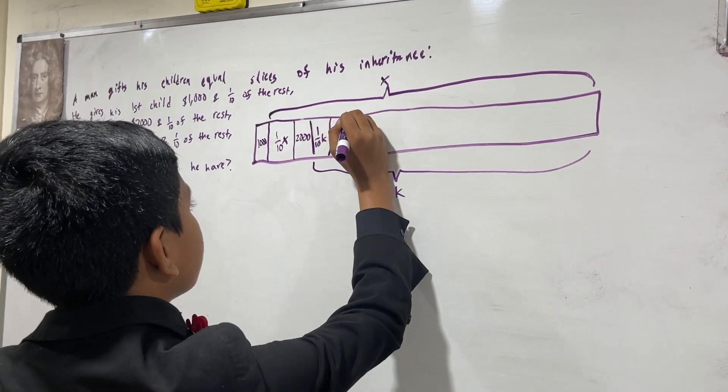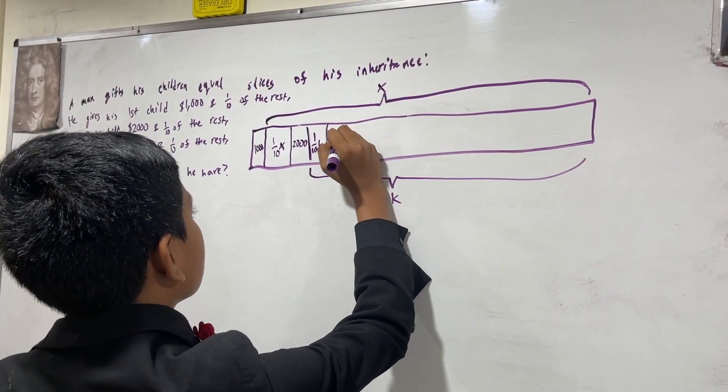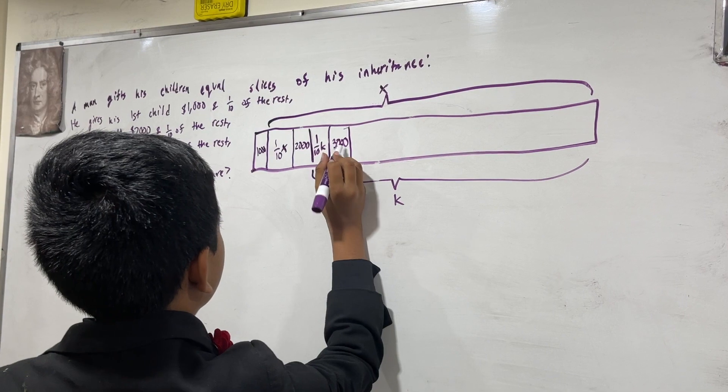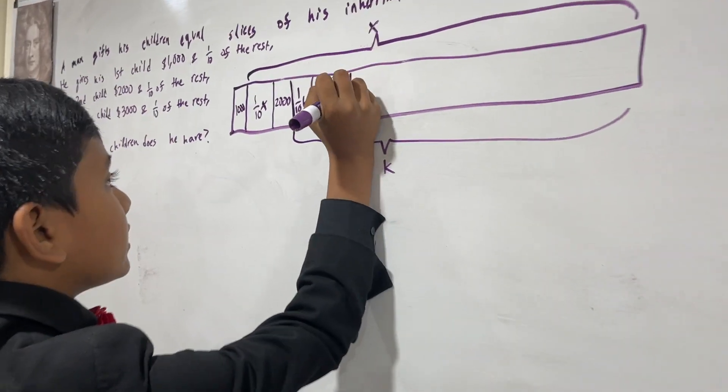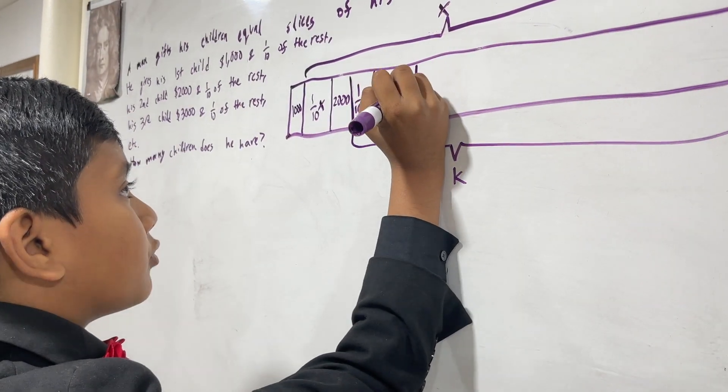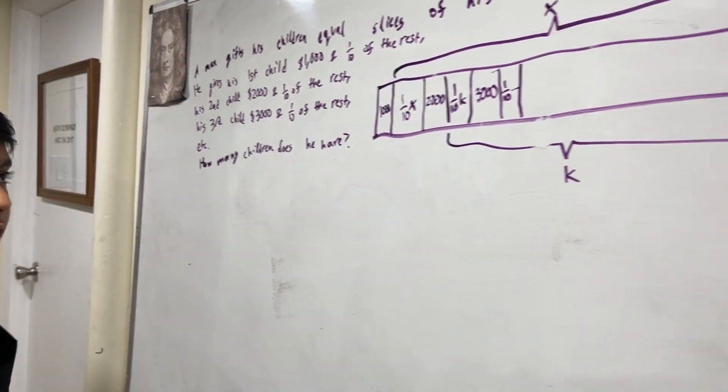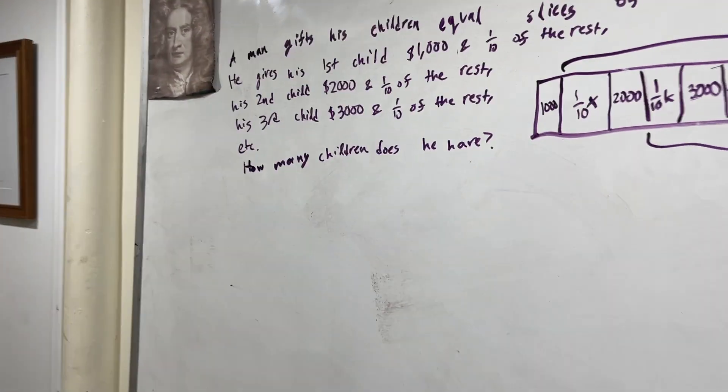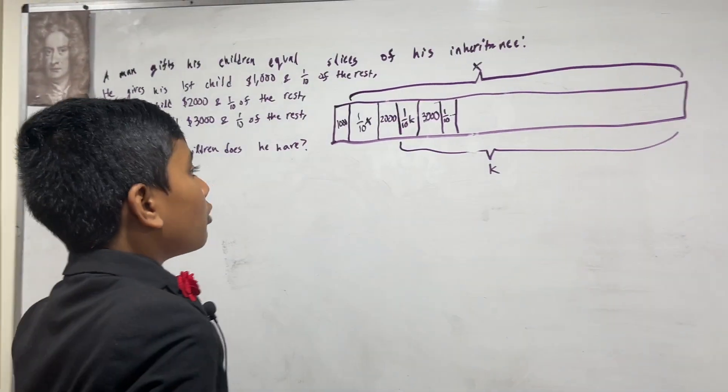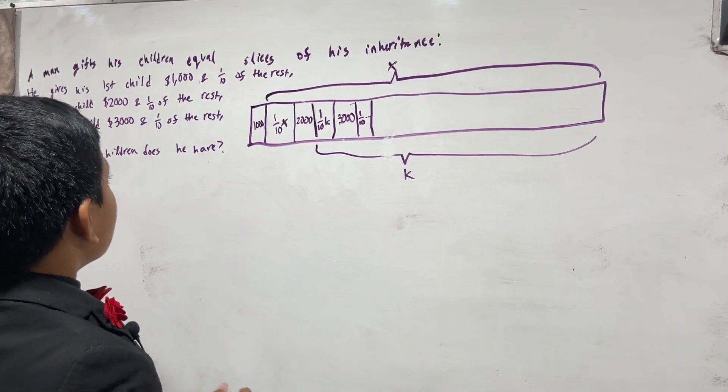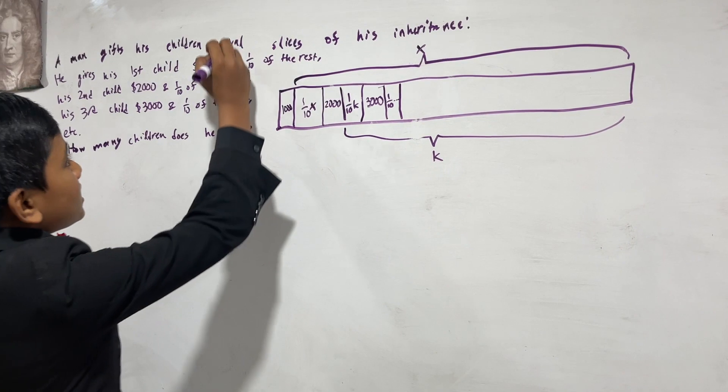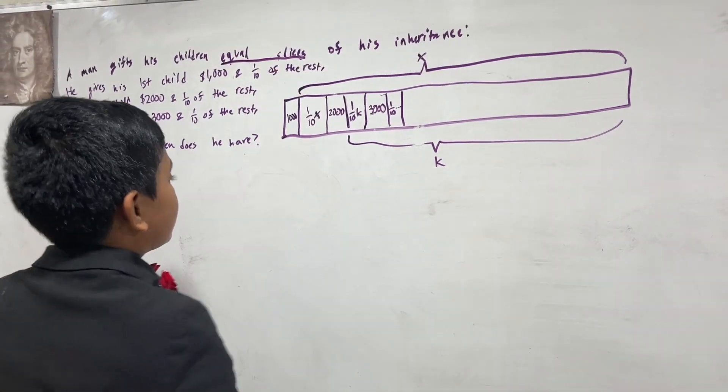Now, the cycle continues where the money that we know gets larger, and the money that we don't know, specifically the one tenth thing, gets smaller. So, how many children does he have? Well, first, we want to know what K is, because the key thing here is that he gives his children equal slices of his inheritance.